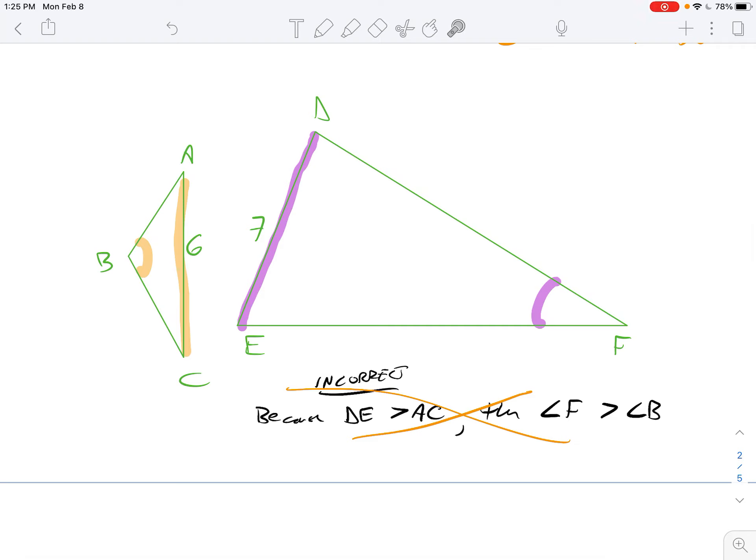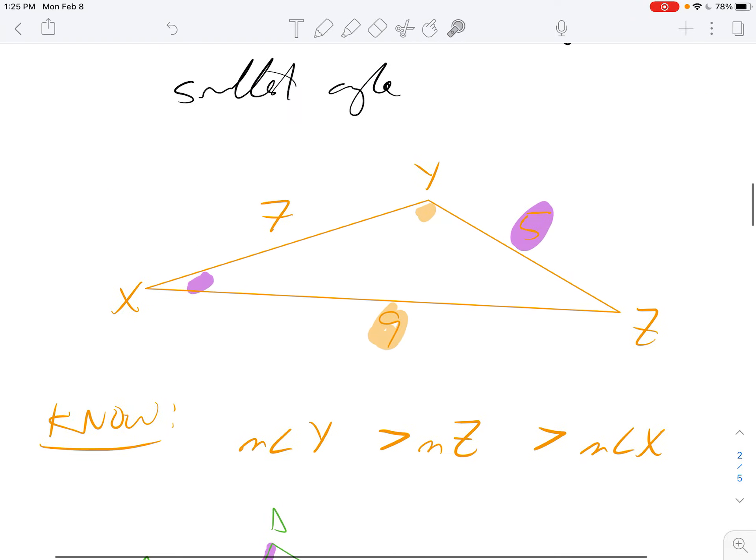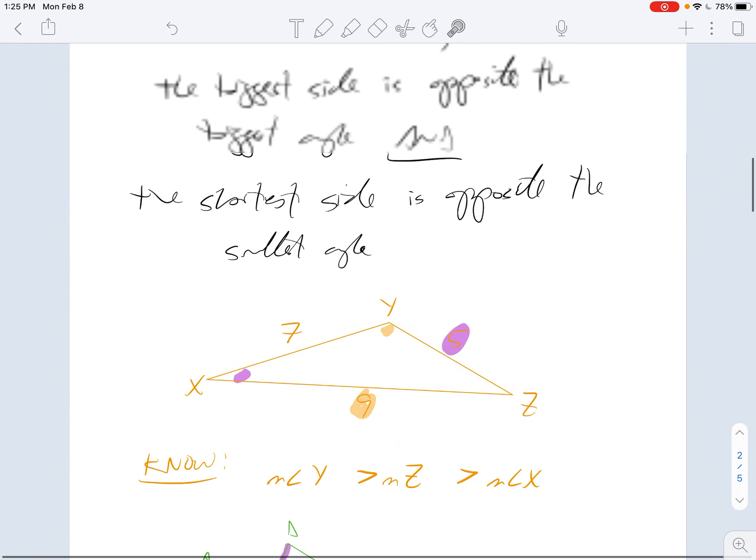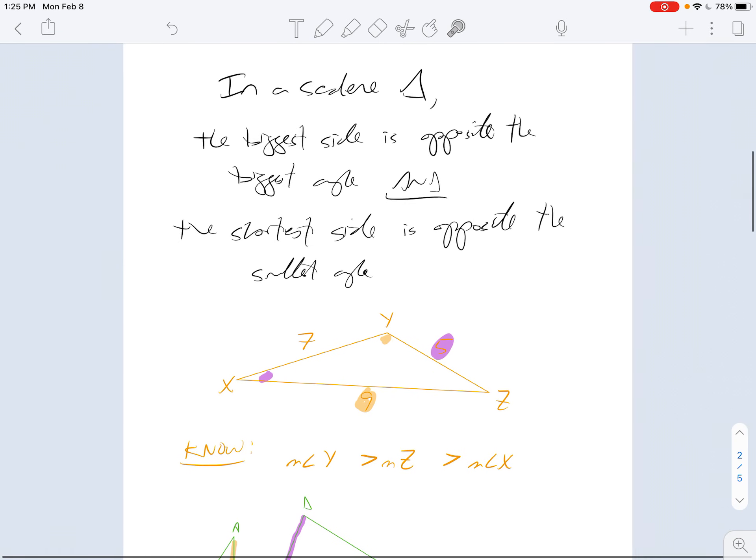And even if they overlap, it doesn't work. So in the practice problems, you'll see an example of two triangles that share a side. Be really careful about using your judgments only for one triangle at a time. But the gist of this is within a triangle, biggest sides are opposite biggest angles, smallest sides are opposite smallest angles.